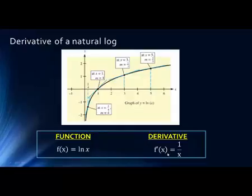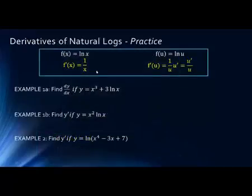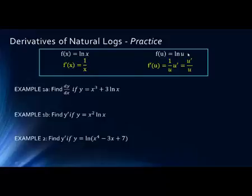This is a formula you'll want to remember: the derivative of the natural log is simply 1 over x, or 1 over the argument. Now if the argument is a function instead of just the variable x, the derivative is 1 over the argument times the derivative of that function — so it ends up being the derivative of the function over the argument value.